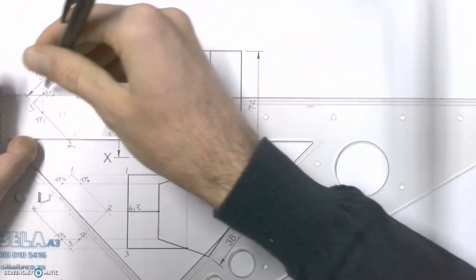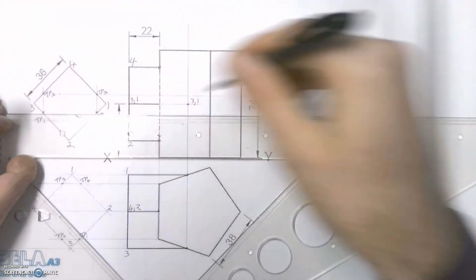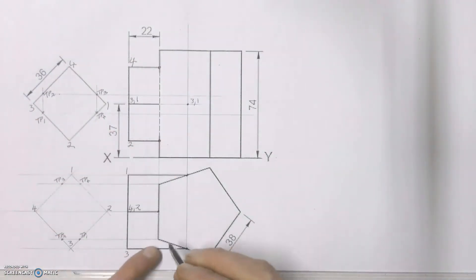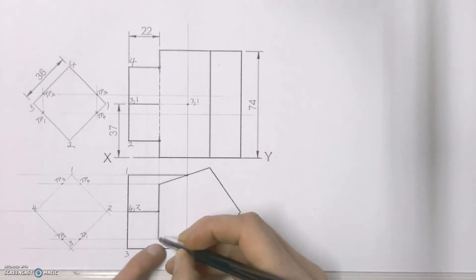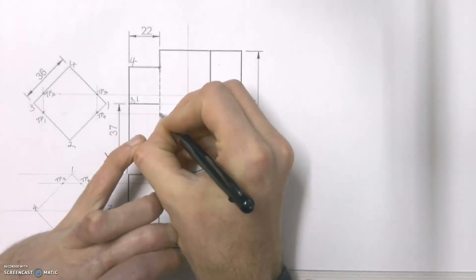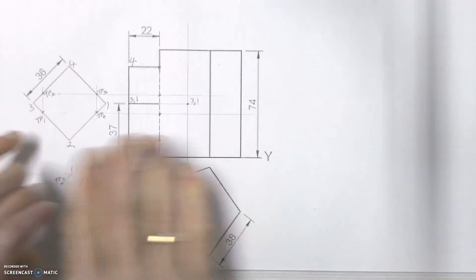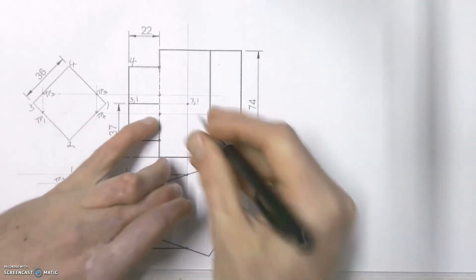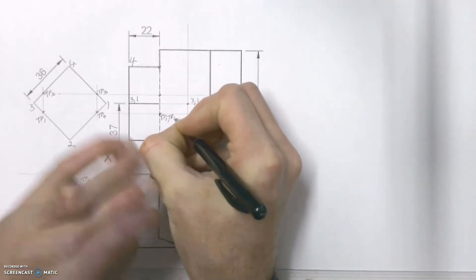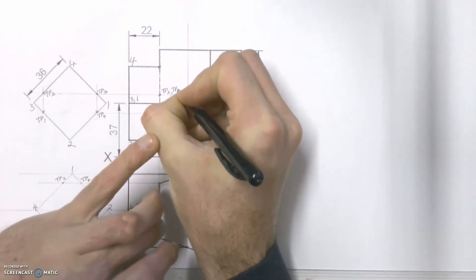If we project those across into our front view to get the turning points there, and line that up with where the turning points came out of our top view, we can clearly see that our turning points are going to land up at those two corners. Labelling them, we'll see turning point 1 first and then turning point 4 on one side, and on the other side turning point 2 and then turning point 3.